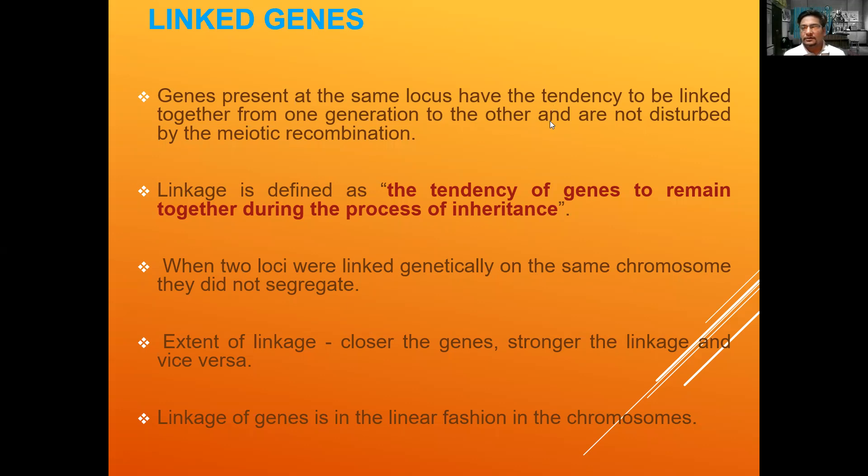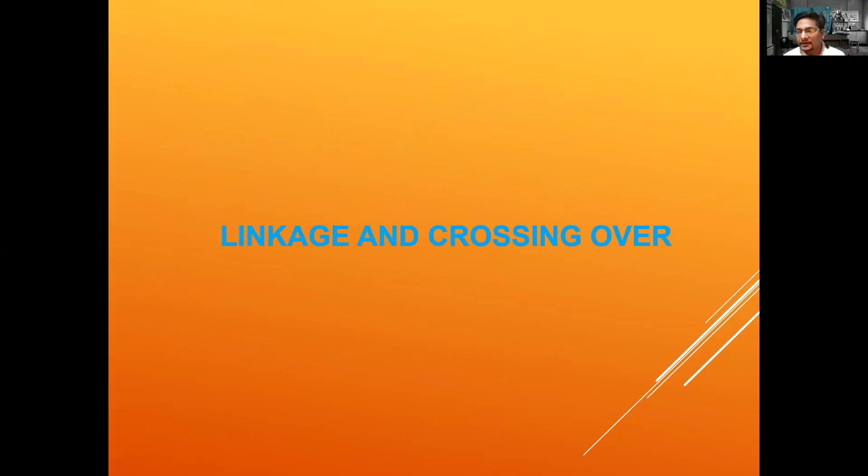Hello everyone, let's start with a new topic. Today we'll talk about linkage and crossing over — a very important topic related to genetics. If you recall Mendel's last rule, the law of independent assortment, in a dihybrid cross Mendel obtained a 9:3:3:1 ratio. Just imagine — if linkage had occurred, he would never have obtained that same ratio.